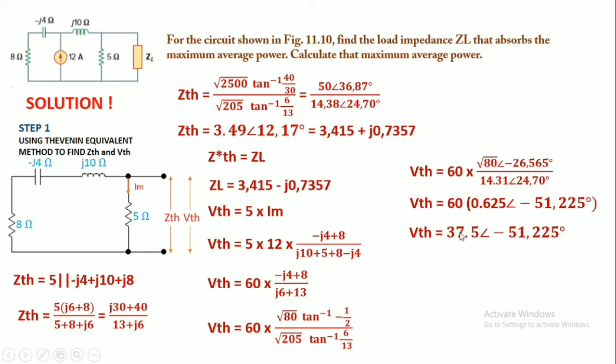And now we can find the maximum average power using Vth. So maximum average power is |Vth|² divided by 8 multiplied with Rth, where Rth is 3.415.